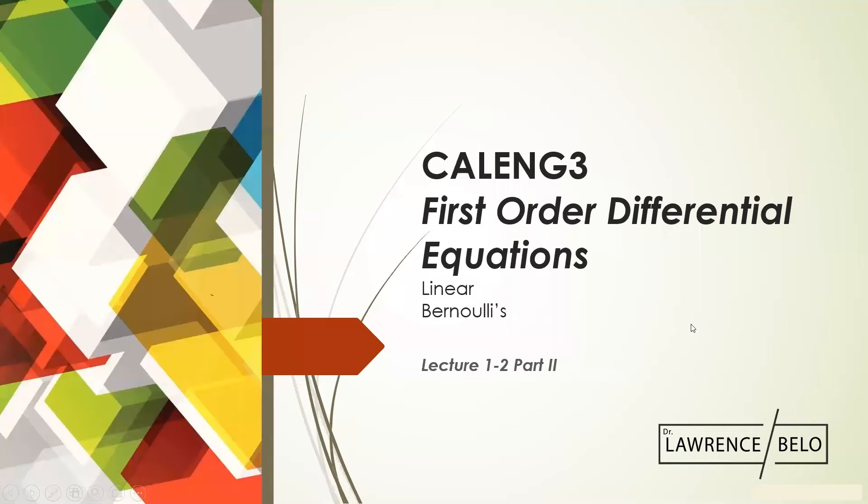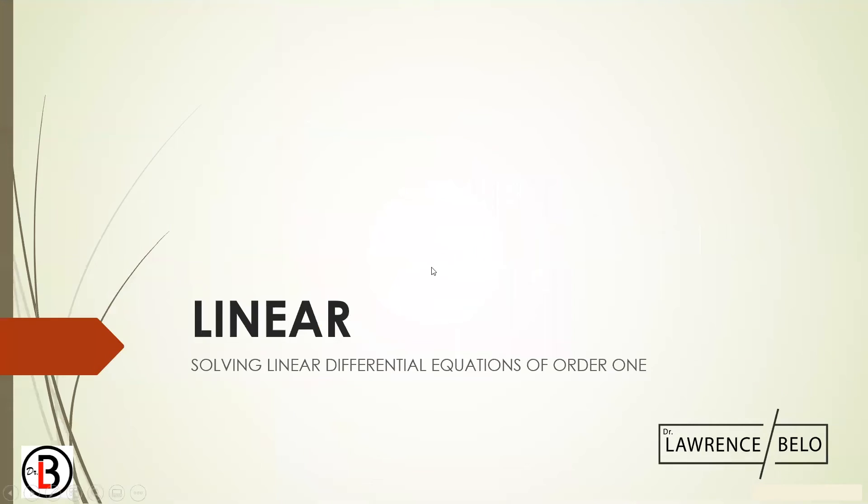This one will be our next topic, the last two of the types: the linear and the Bernoulli. So let's go. So linear, this is the fourth one.